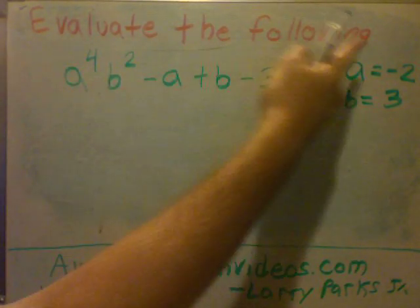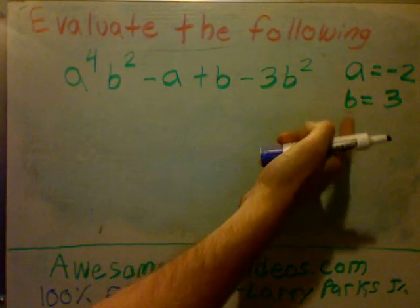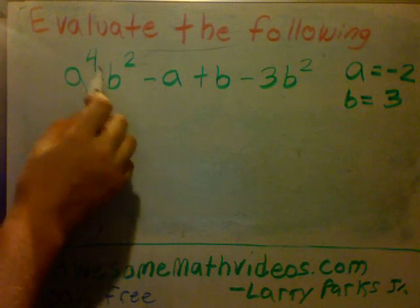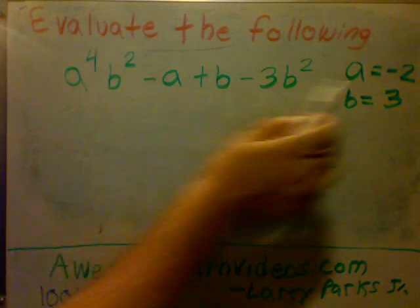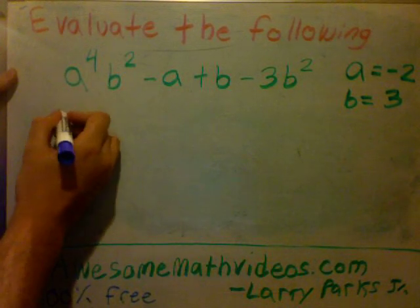Okay, the question is evaluate the following, which means plug in. So we're going to plug in a equals negative 2 and b equals 3 into this. So we have a to the fourth b squared, so I'm going to take my a is minus 2 and plug it in here. Be sure you use parentheses, so I'm going to put minus 2.